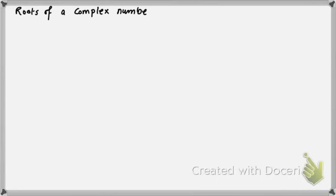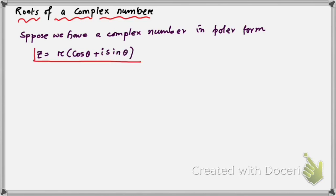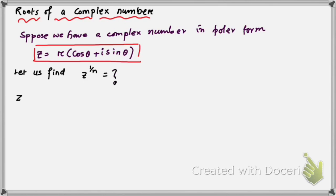Suppose we have a complex number z in polar form: z = r(cos θ + i sin θ). We have to find the nth root of z, that is z to the power 1/n. So z = r(cos θ + i sin θ), where r is the modulus of z.